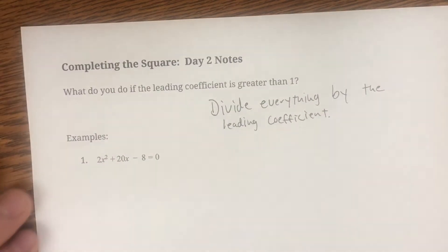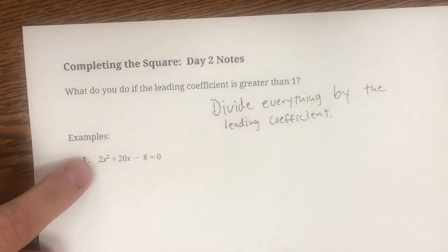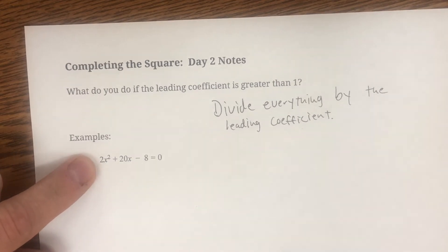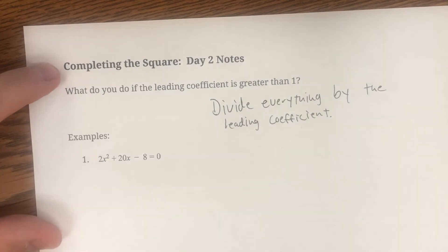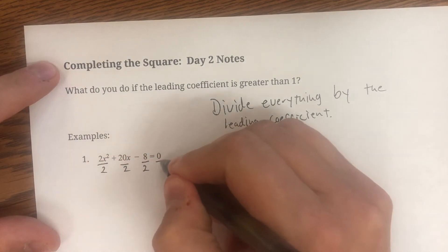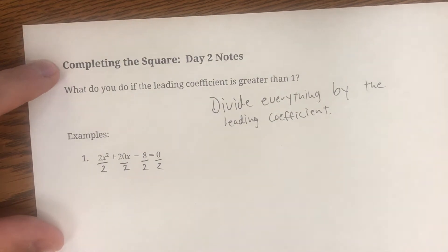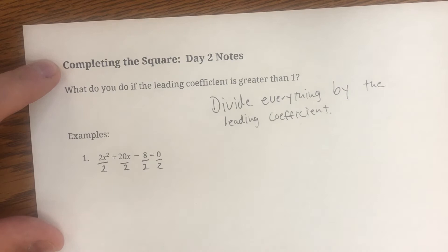So first example says 2x squared plus 20x minus 8 equals zero. So the leading coefficient is not one, it is two. So we need to divide everything by two. All of the terms are going to be divided by two. If we do it to one side, we have to do it to the other.